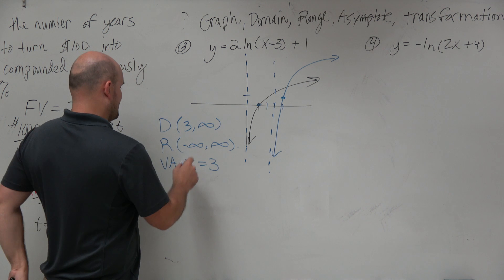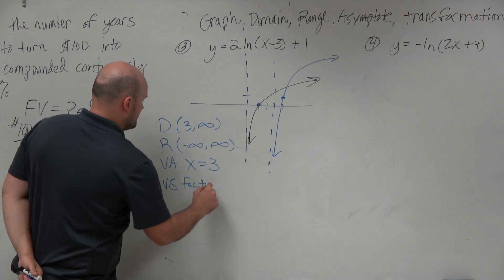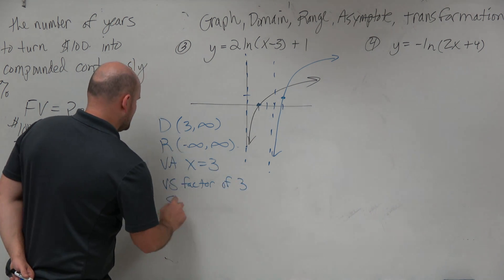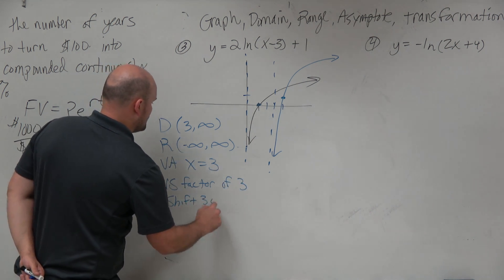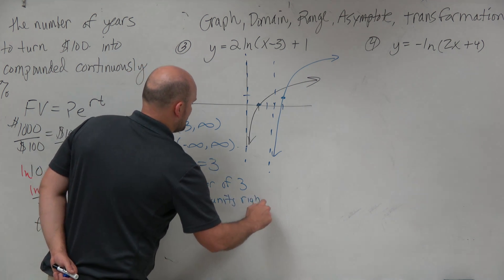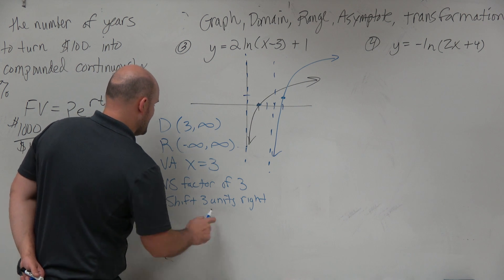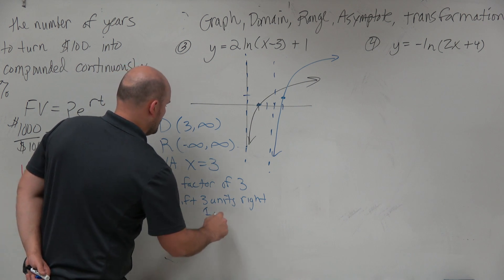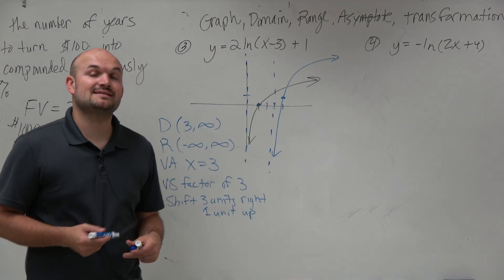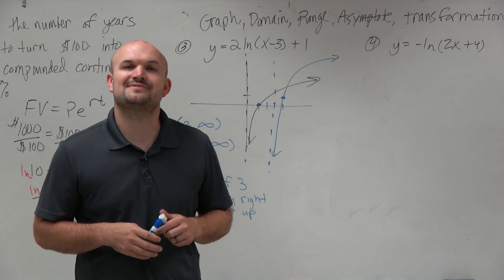And the transformations — transformations is a vertical stretch factor of 2, shift 3 units right, 1 unit up. And there you go, ladies and gentlemen. That is how you graph logarithmic functions with transformations. Thanks.